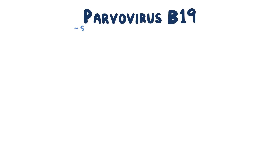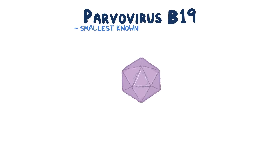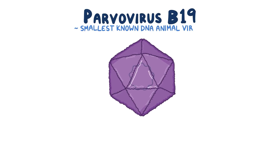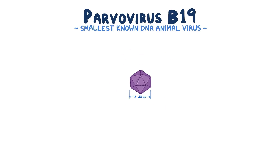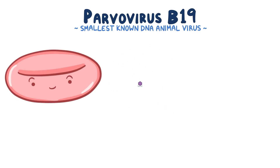Parvovirus B19 is the smallest known DNA animal virus, coming in at a tiny 18 to 28 nanometers in diameter. In comparison, the average size of a single human red blood cell is a whopping 7,200 nanometers.